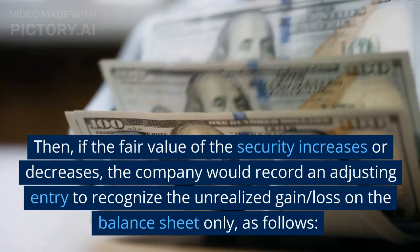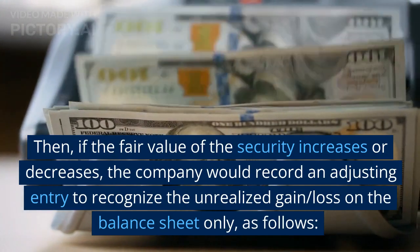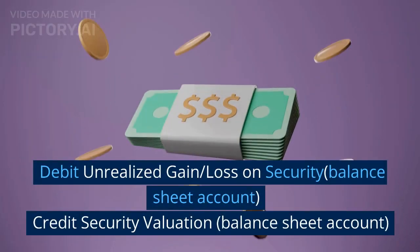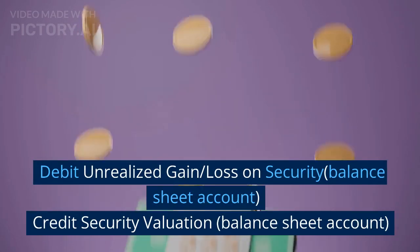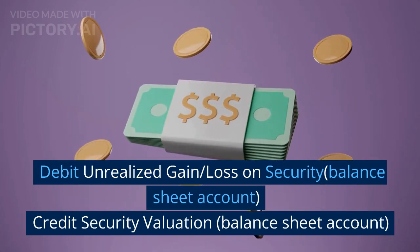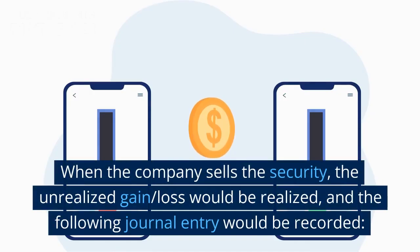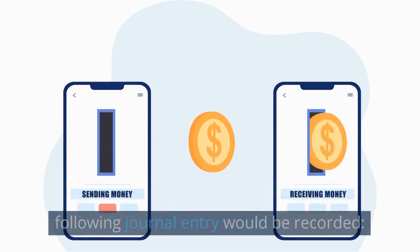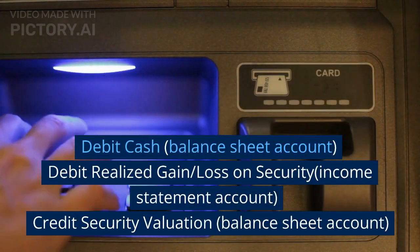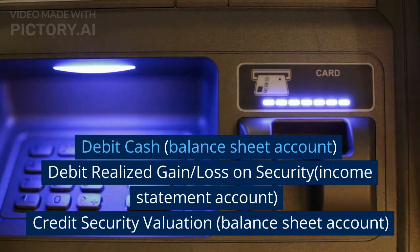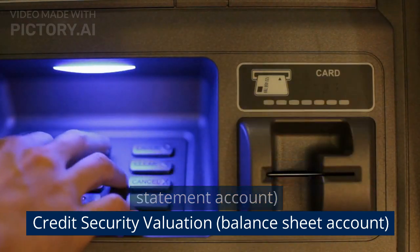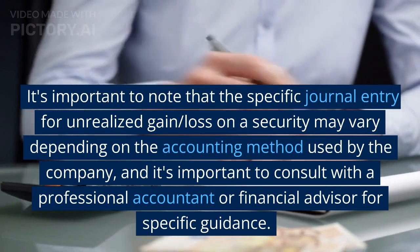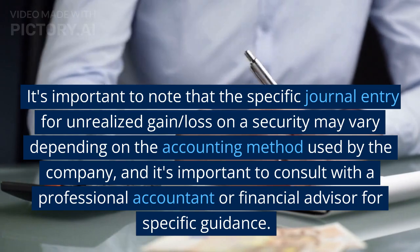Then, if the fair value of the security increases or decreases, the company would record an adjusting entry to recognize the unrealized gain/loss on the balance sheet only: Debit Unrealized Gain/Loss on Security (Balance Sheet Account), Credit Security Valuation (Balance Sheet Account). When the company sells the security, the unrealized gain/loss would be realized: Debit Cash (Balance Sheet Account), Debit Realized Gain/Loss on Security (Income Statement Account), Credit Security Valuation (Balance Sheet Account). Note that the specific journal entry may vary depending on the accounting method used, and it is important to consult with a professional accountant or financial advisor for specific guidance.